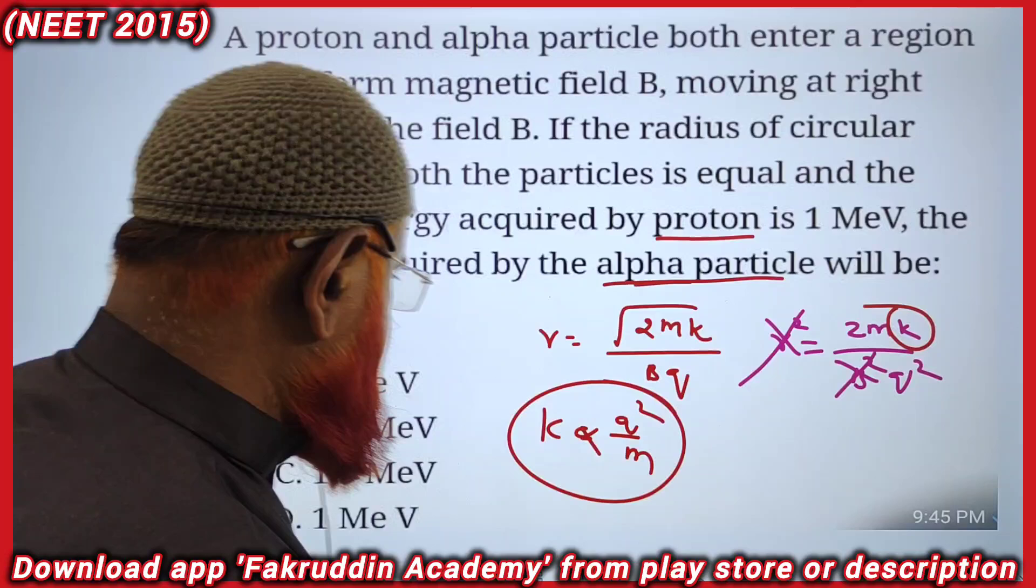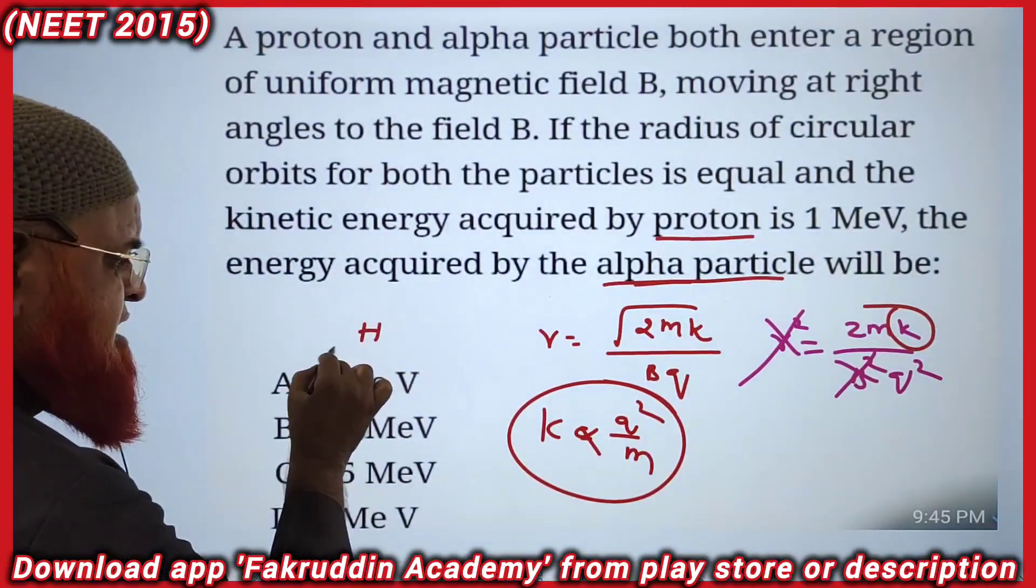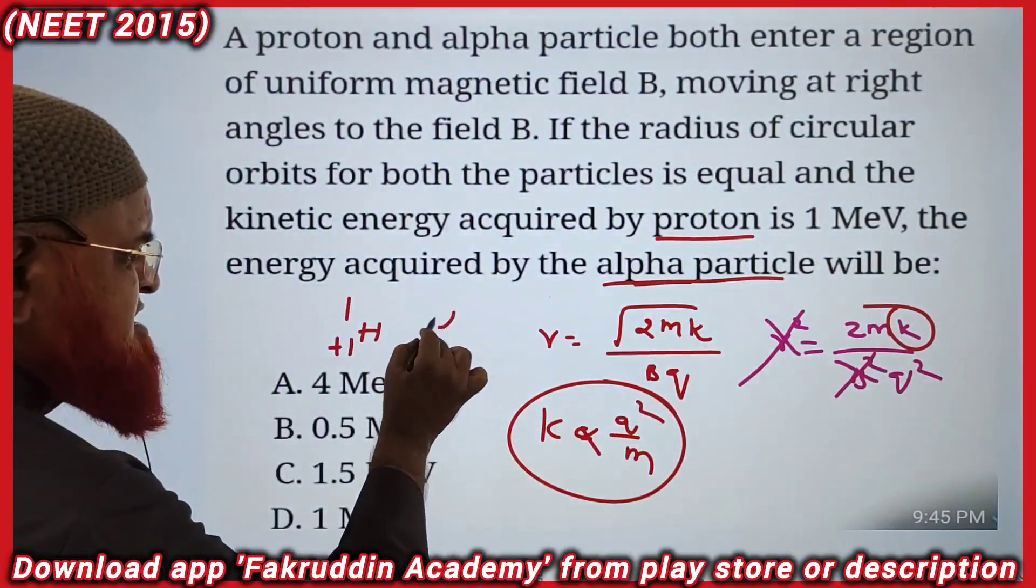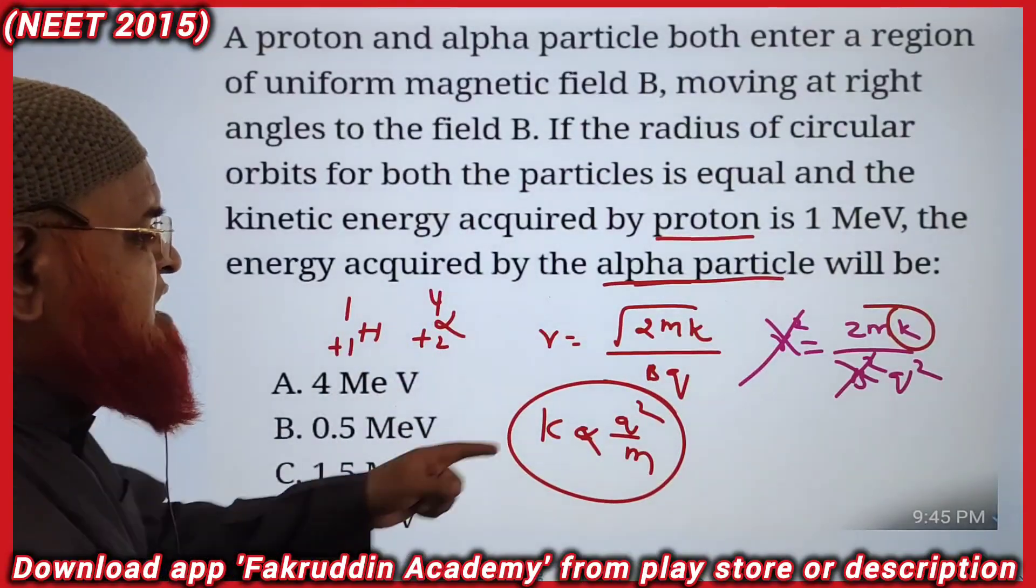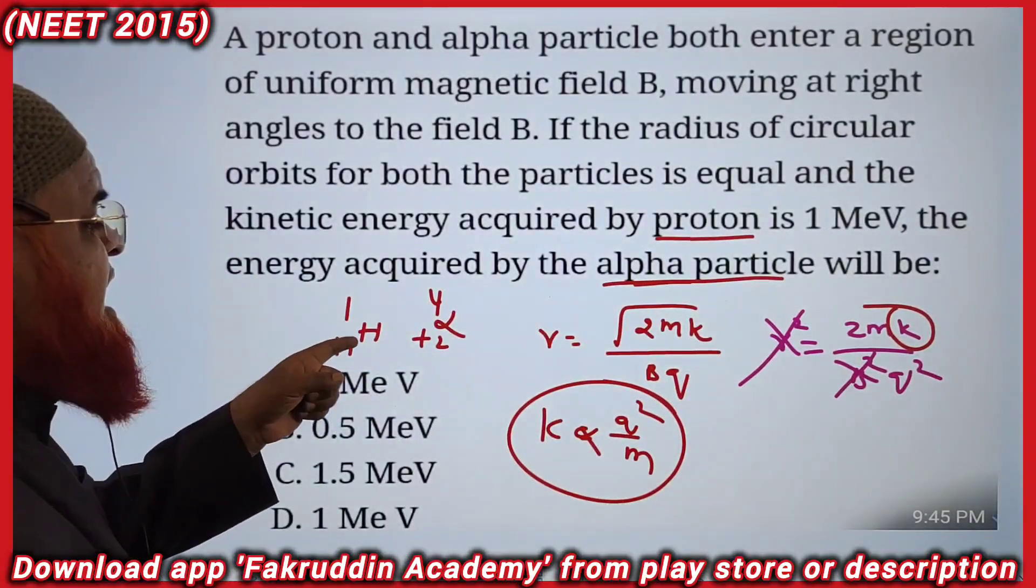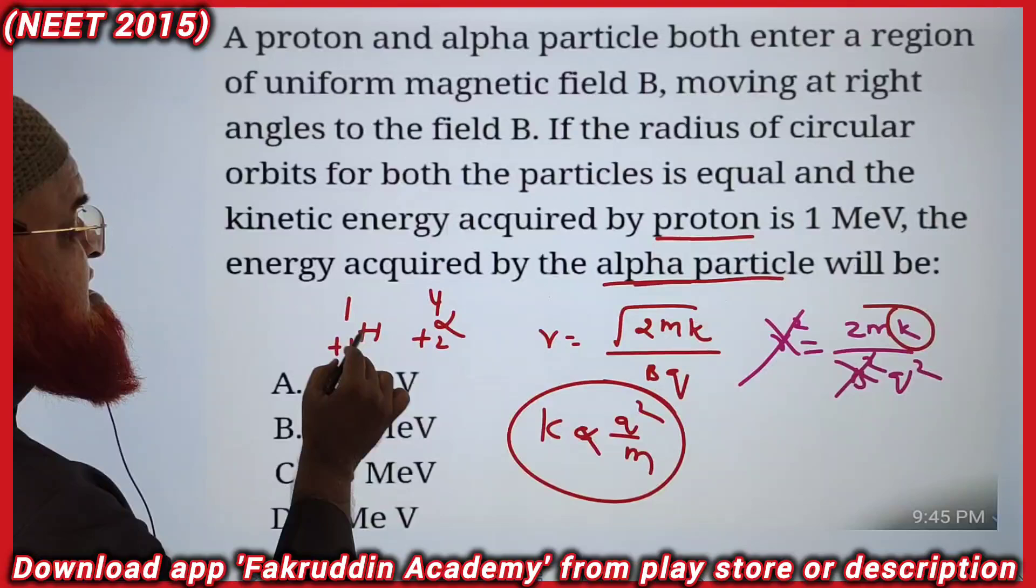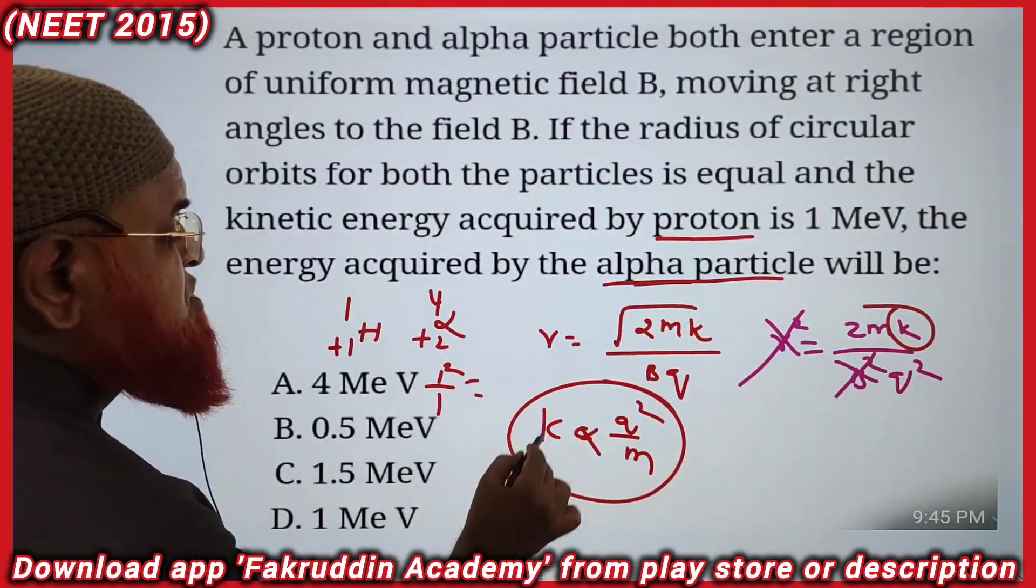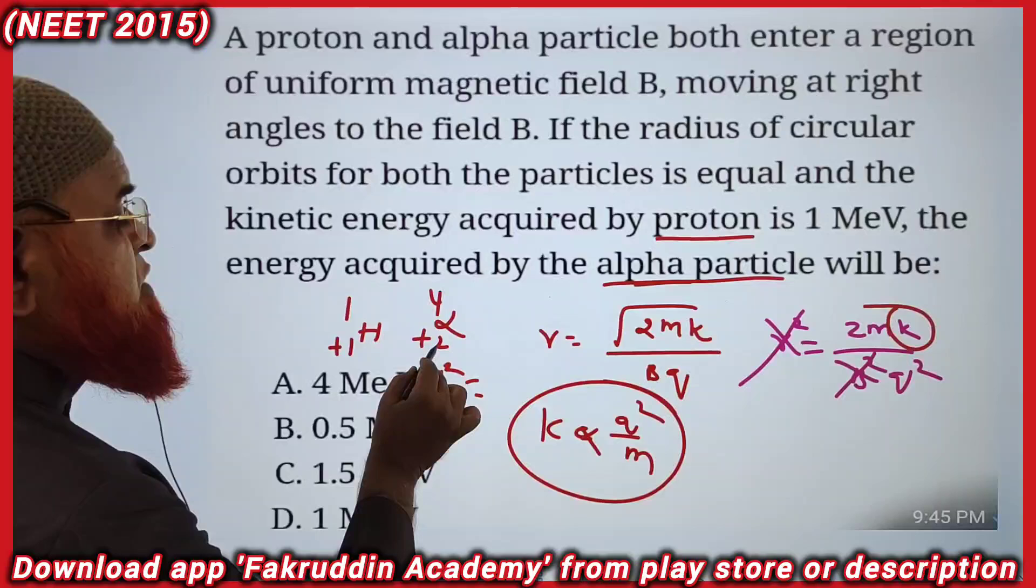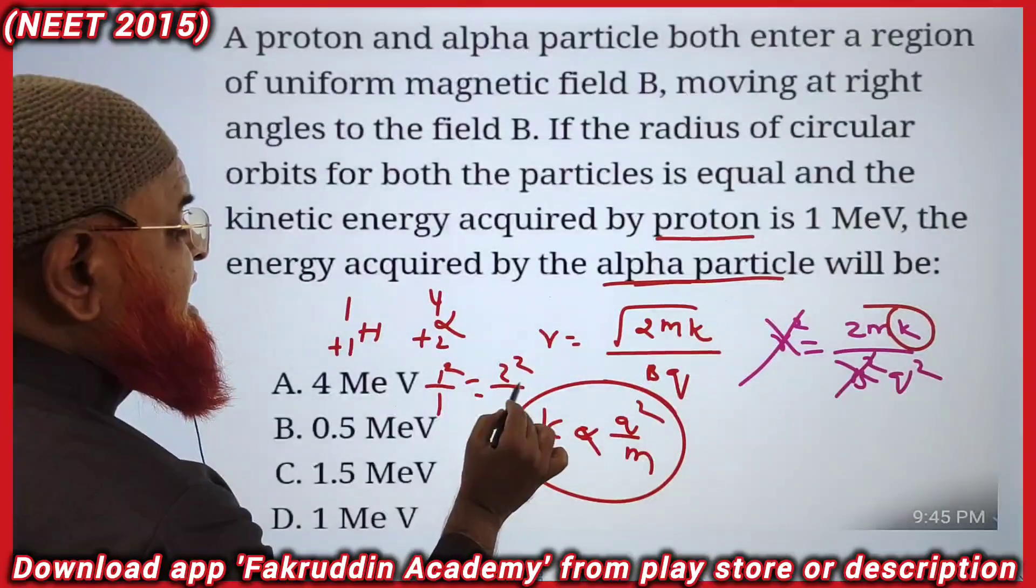Now this relation we will discuss for both particles. One is hydrogen plus one, another is alpha particle plus two and mass four. So Q²/m for hydrogen: Q² is 1²/1 equals 1. Q²/m for alpha particle: Q is 2, so 2²/4 equals 4/4 equals 1.